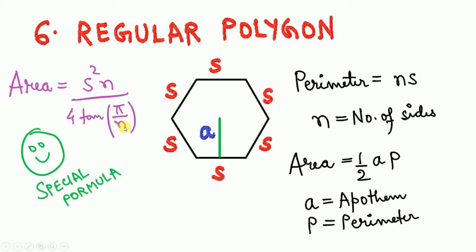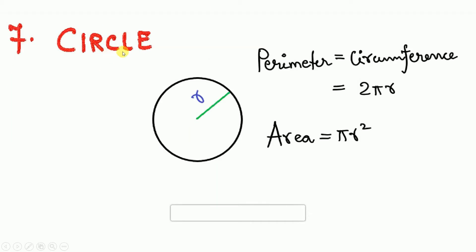The second formula for the area of a regular polygon is: area = s² × n / (4 × tan(π/n)), where n is the number of sides and s is the side length. For the example shown with 6 sides, substitute n = 6 to get the hexagon area formula.